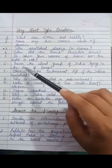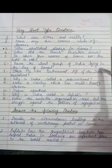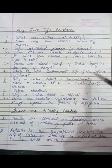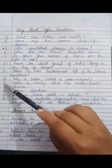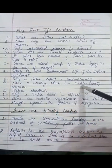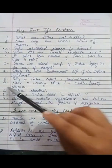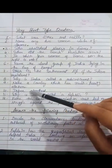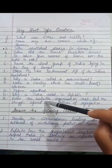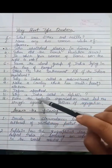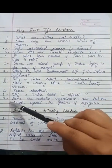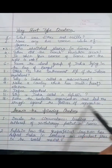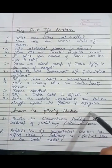Sixth: name the island group of India lying in the Bay of Bengal. Seventh: which is the southernmost tip of the Indian mainland? Eighth: why is India called a subcontinent? Ninth: name a country which has multi-party elections. Tenth: define apartheid. Eleven: why is India called a republic? Twelve: name the umbrella organization that led the struggle against the policies of segregation.